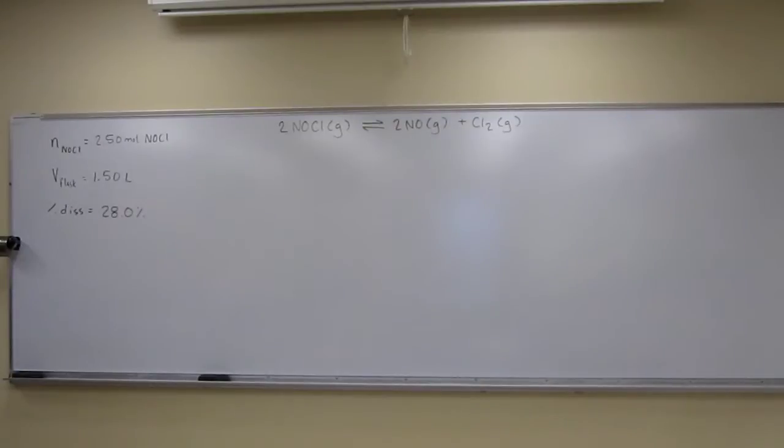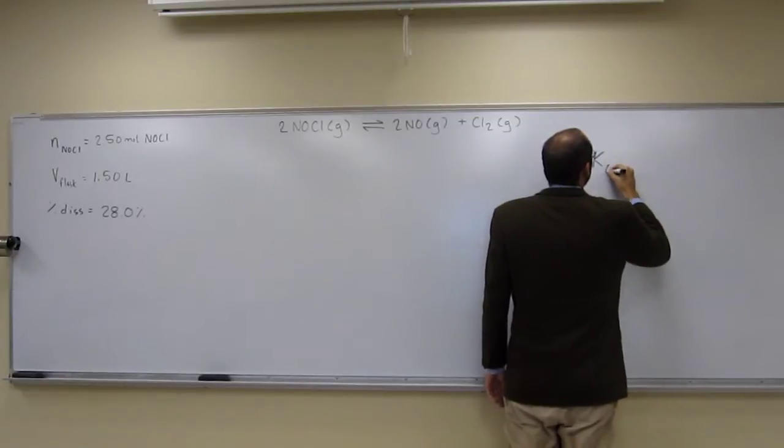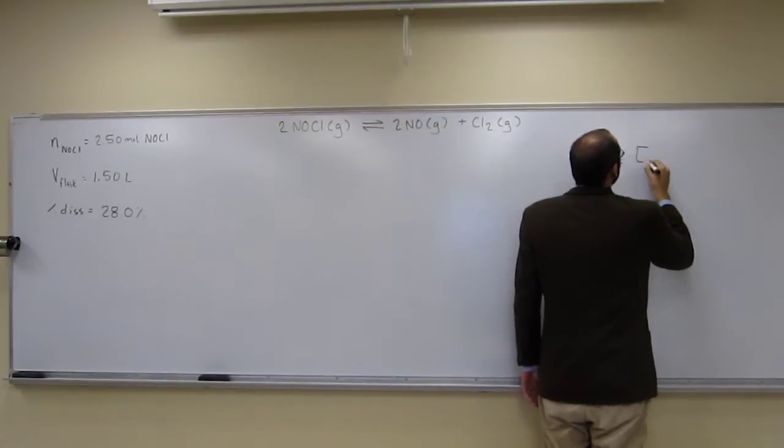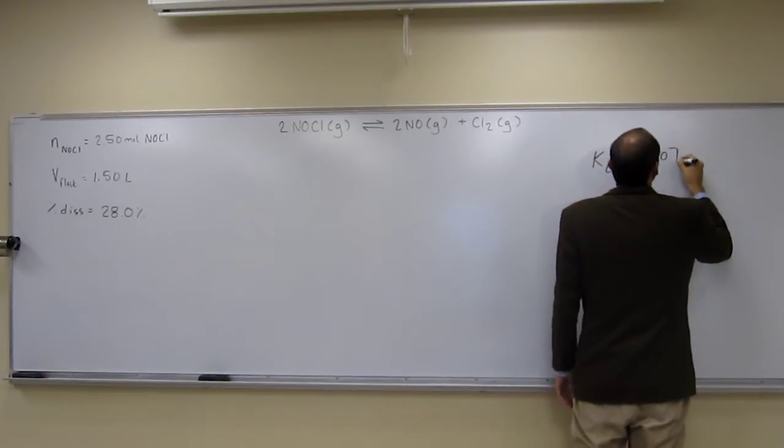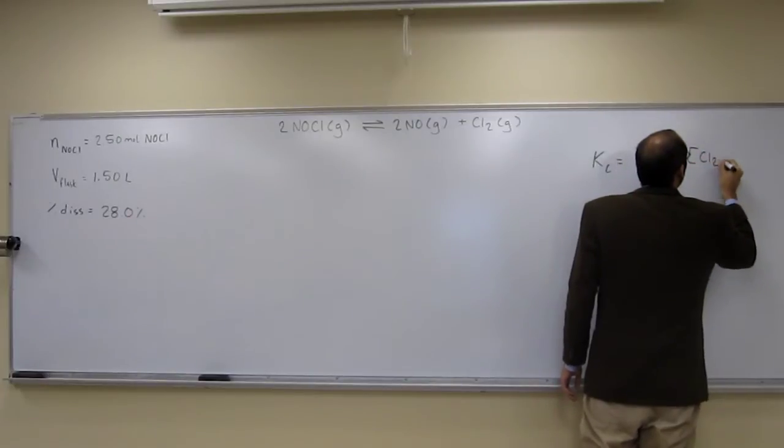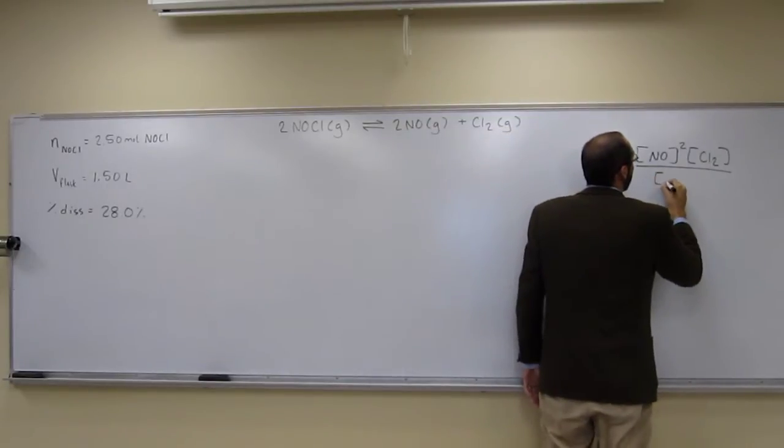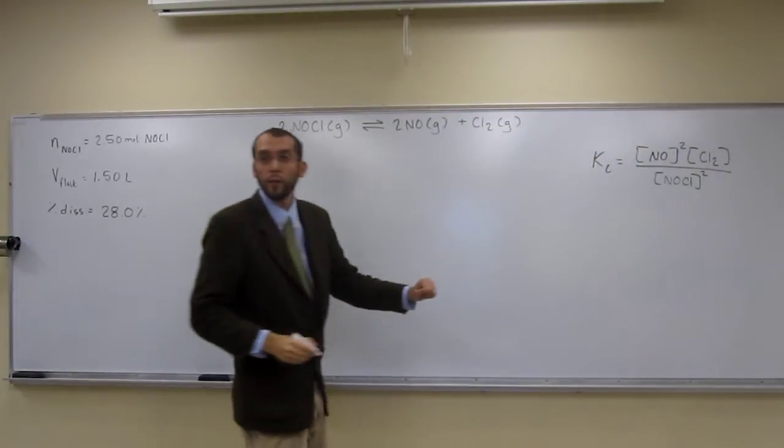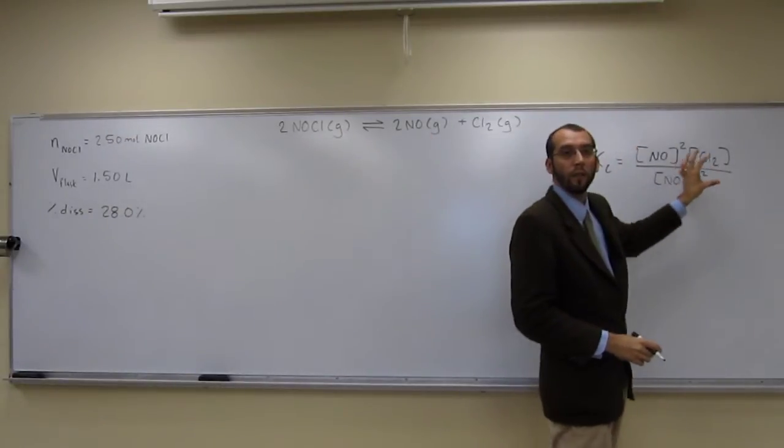I guess the first thing we want to write down is what is the equation for the equilibrium constant. So, the equilibrium constant Kc is going to be the concentration of the products, raised to their coefficients, divided by the concentration of the reactants, raised to their coefficients. So everybody should have been able to do that right now. That implies that we need to get the concentrations of all of these things.